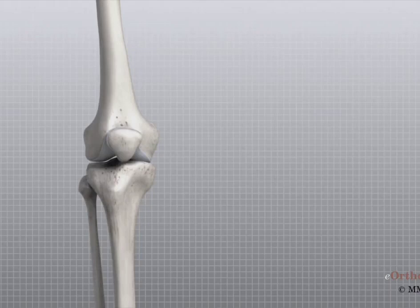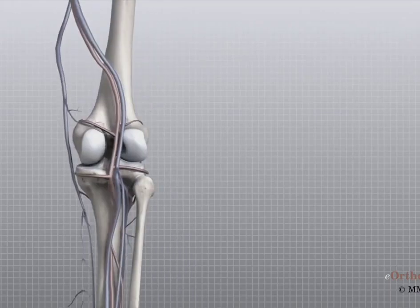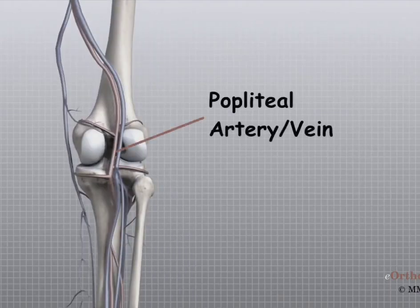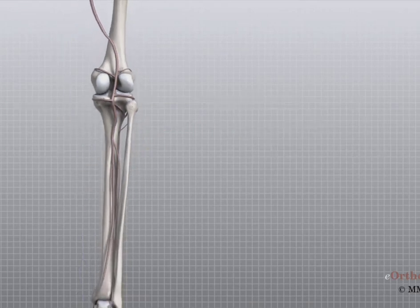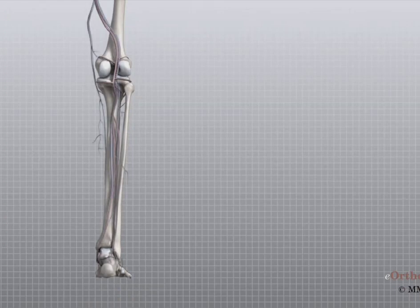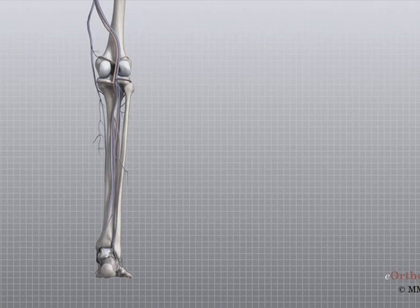The major blood vessels around the knee travel with the tibial nerve down the back of the leg. The popliteal artery and the popliteal vein are the largest blood supply to the leg and foot. If the popliteal artery is damaged beyond repair, it is very likely the leg will not be able to survive. The popliteal artery carries blood to the leg and foot, while the popliteal vein carries blood back to the heart.